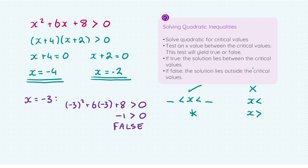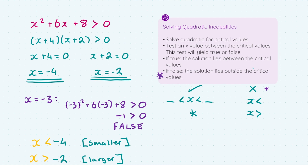Therefore, for my solution, I have to say that x is outside the two critical values. I'm going to have that x is less than one critical value and x is greater than another critical value. x is always less than the smaller critical value — so x < -4 — and x is always greater than the larger critical value — so x > -2. It's worth noting: x is always less than the smaller critical value and x is greater than the bigger critical value.